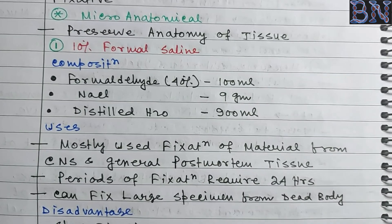Bouin's solution is very important. It is practical and used for the digestive system and nervous system. It preserves glycogen but lyses RBCs. It is recommended for gastrointestinal tract biopsy — for example, if cancer is suspected in the digestive system, Bouin's fluid is used for fixation. It is also used for animal embryos and endocrine glands. Stained tissue appears bright yellow due to picric acid — this is very important.